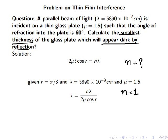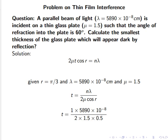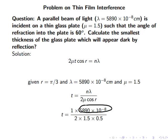For n = 1, we will have the smallest thickness. If we substitute all the values, then we will have n = 1, λ = 5890 × 10⁻⁸, μ = 1.5, and cos r.